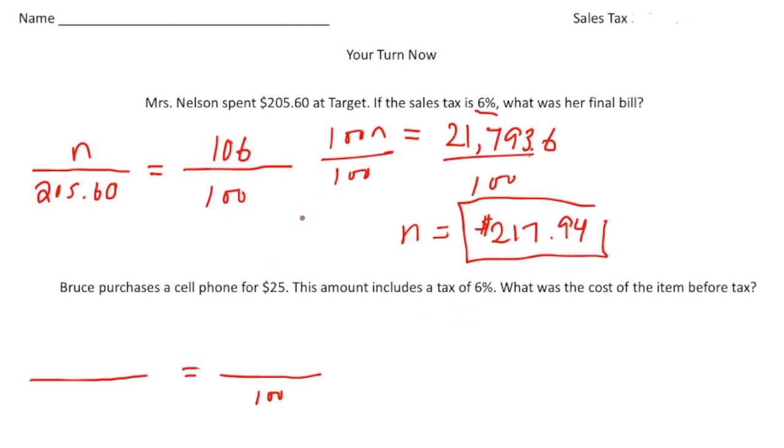All right, well, so again, $25, that's the cost that includes the sales tax. All right, so we know that sales tax is 6%. So this is going to be 100 plus 6%, so 106. But this time, notice this $25, again, includes the tax, right? So that's why it needs to be across from the 106. So 25 goes there and the unknown goes here.